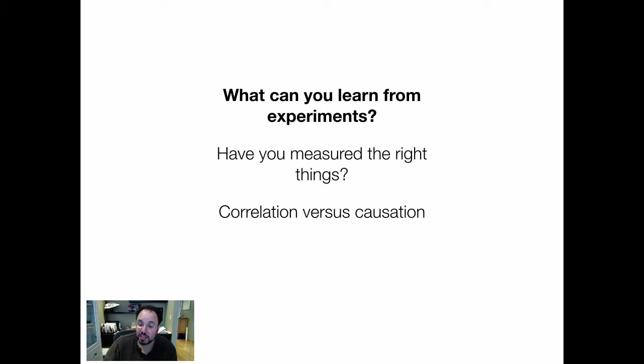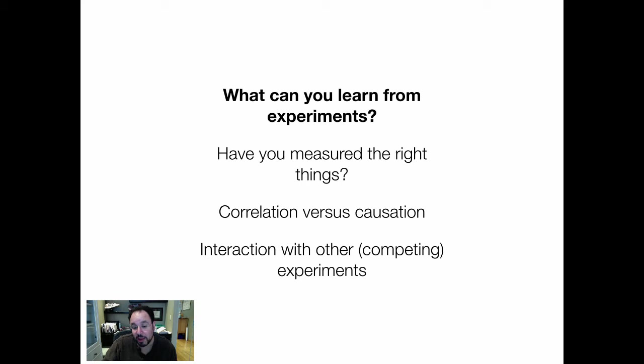Another issue is correlation versus causation — something you'll hear about in statistics courses. Is the relationship you're seeing from an experiment a mere correlation, or is there a causal story behind it? If you think about your venture from an experimental point of view, you may be able to design it so you can get causation out of it. You also have to worry about interacting with other competing experiments. You're not running these things in a lab — you're running them in a market. There could be other experiments running at the same time, which may muddy the waters of what you can learn from yours.